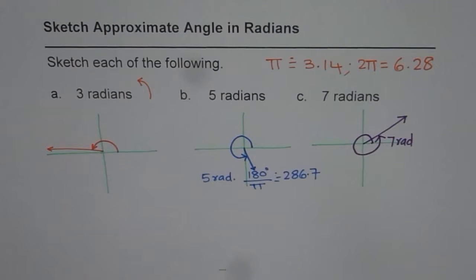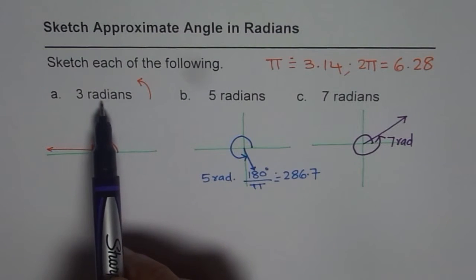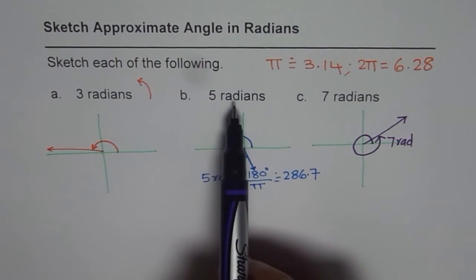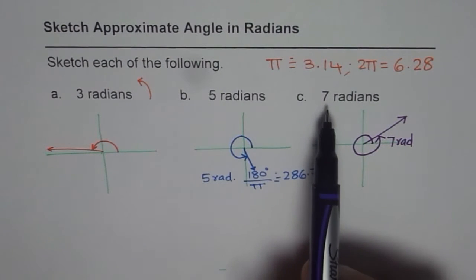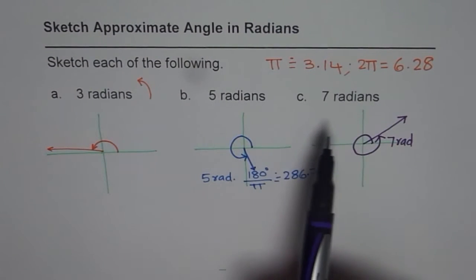In general, you can think 3 radians is less than 3 times 60, 5 radians is less than 5 times 60 and 7 radians is less than 7 times 60. That will approximately give you the value, right.